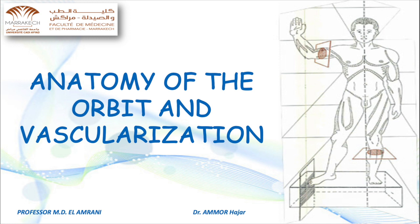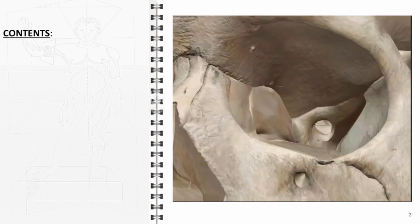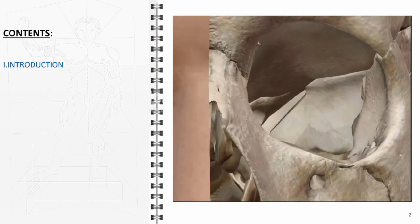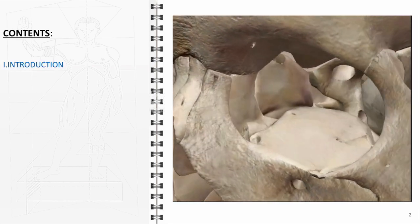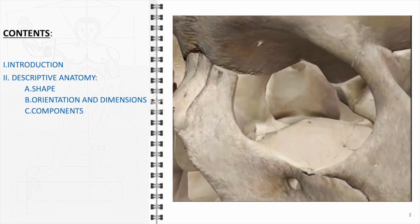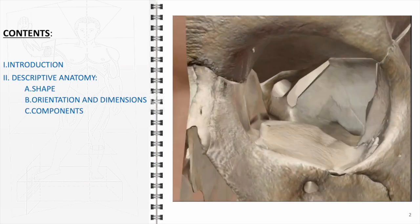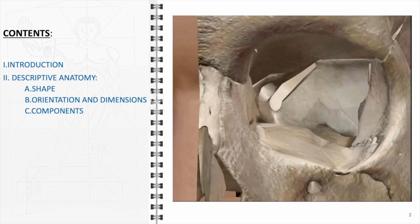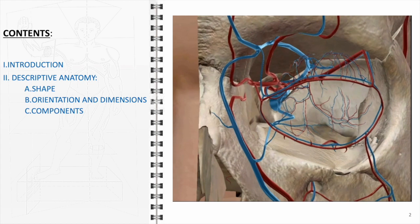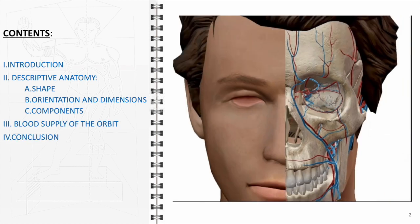In this video, we will discuss in detail the anatomy and vascularization of the orbit, a complex structure in the human skull that houses the eye and its associated structures. We will begin with an introduction highlighting the bony structure of the orbit, followed by its shape, orientation, and dimensions, along with its components. Before concluding, we will review its blood supply.